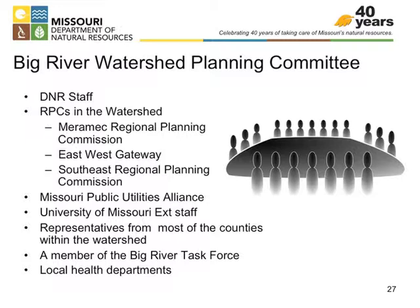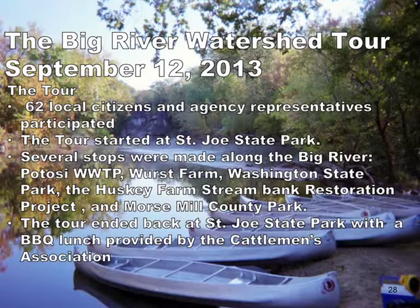So in the Big River watershed, the committee included DNR staff, the three regional planning commissions, the Missouri Public Utilities Alliance, University of Missouri Extension staff, representatives from the counties there, a member of the Big River Task Force, which was the main watershed group in the region, and local health departments. They started off after a couple of meetings and decided to take a tour of the watershed. The tour included 62 citizens and some agency representatives, started at the St. Joe State Park and took several stops along the river. I believe it was on the river and also in cars between stops or a bus, and ended back at the St. Joe State Park with a lunch provided by the Kettleman's Association, who was supporting the effort. There's just a few pictures from some of the places that they went, water treatment plant. I believe that's when they started at the state park.